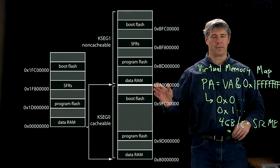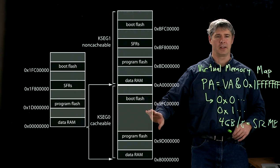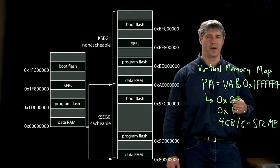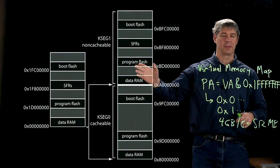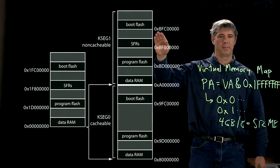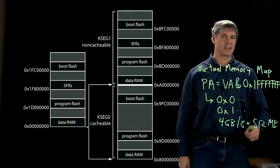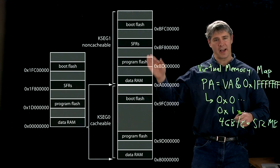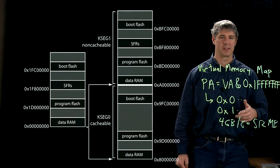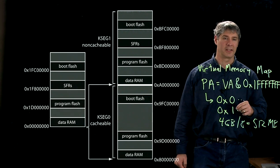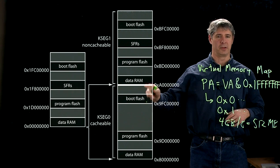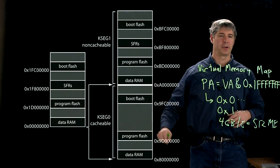That's our virtual memory map, including the cacheable segment — most program code you write will be cacheable so the CPU can execute faster — and the non-cacheable segment. Whenever you reset the PIC, the first thing it does is jump to the address BFC00000, which is the start of the boot flash segment, and it's non-cacheable. So the PIC starts by reading these non-cacheable program statements — in our case, this is where the bootloader lives — and then may jump to a segment in cacheable program flash memory.